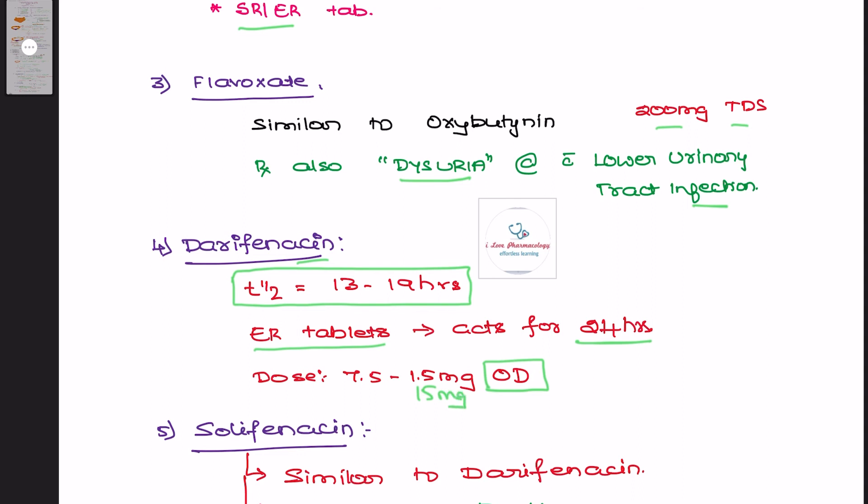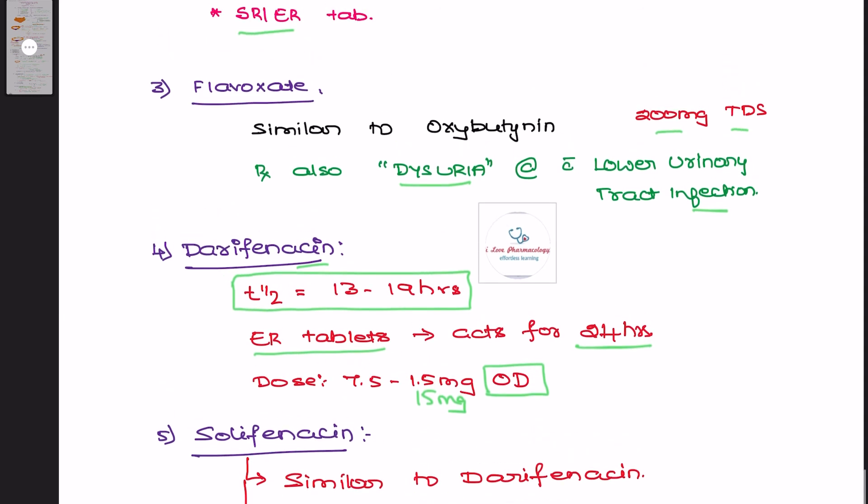Solifenacin is almost similar to darifenacin and is also indicated in the treatment of overactive bladder. This concludes the three-part discussion on vesicoselective anticholinergic agents. If you find this video useful, please do subscribe to my channel I Love Pharmacology and do not forget to share and hit the like button for more updates on pharmacology and its clinical applications. Thank you.